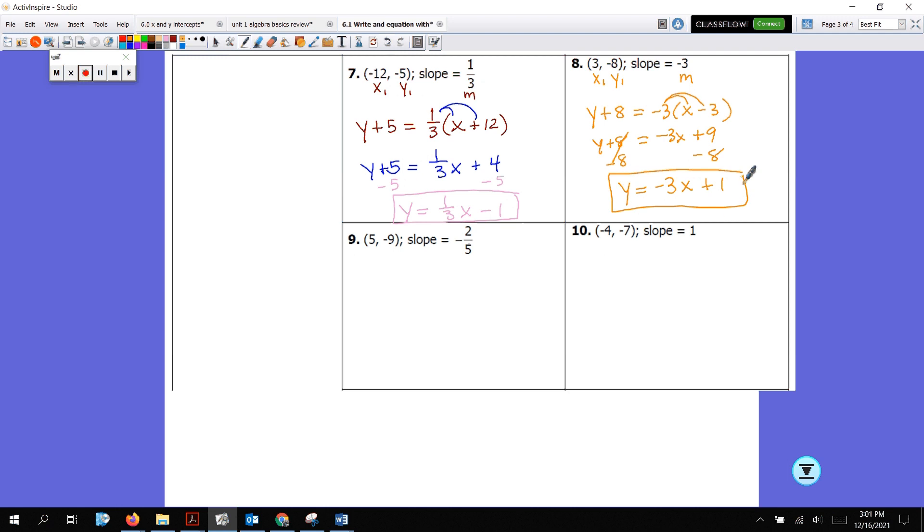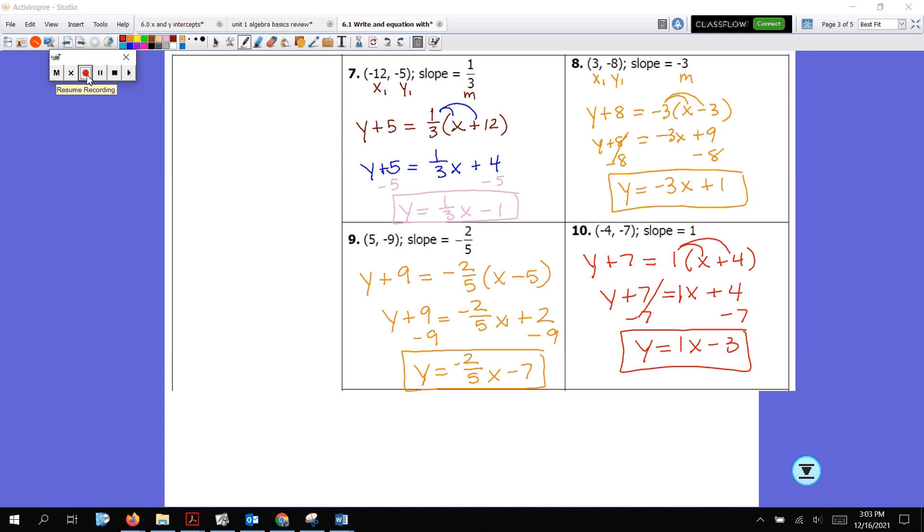All right. I want you to do 9 and 10. So pause the video again because I want you to be able to practice this. This is important. We're going to be writing equations for this entire unit, and it's really important that you know how to do this one. All right. Check it out. So look at number 9. I have y equals negative 2 fifths x minus 5. Why did I say that? I was just kidding. Y equals negative 2 fifths x minus 7. Hopefully that's what you got. When you distributed here, negative 2 times 5, this would be positive 2. So the negative times the negative makes the positive, and the 5 is going to cancel it out. So for number 10, you should have got y equals 1x minus 3. All right. More practice ahead. Don't worry. Good for you.